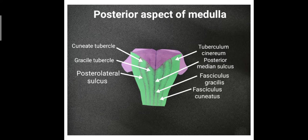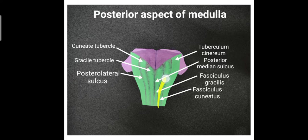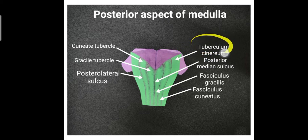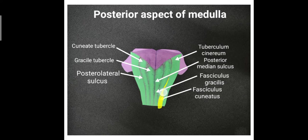Reviewing the posterior aspect of the medulla with the model: you can see the posteromedian sulcus, then two rounded elevations — the gracile tubercle and the cuneate tubercle. Then we have fasciculus gracilis and fasciculus cuneatus. Lateral to that, the longitudinal elevation termed the tuberculum cinereum, and the posterolateral sulcus. The striae medullares defines the upper boundary of the medulla.